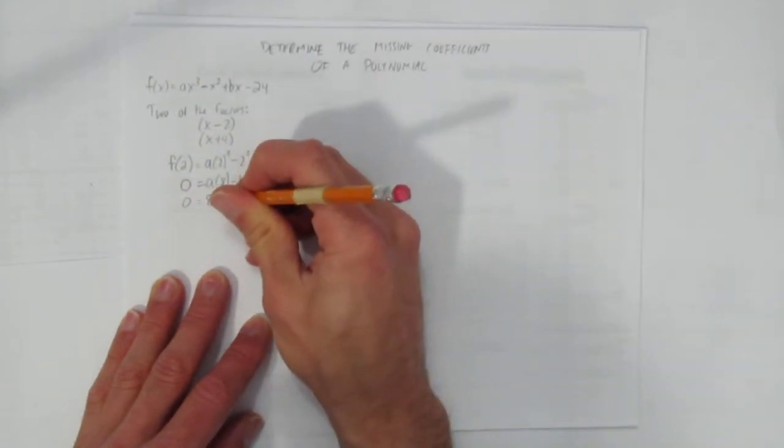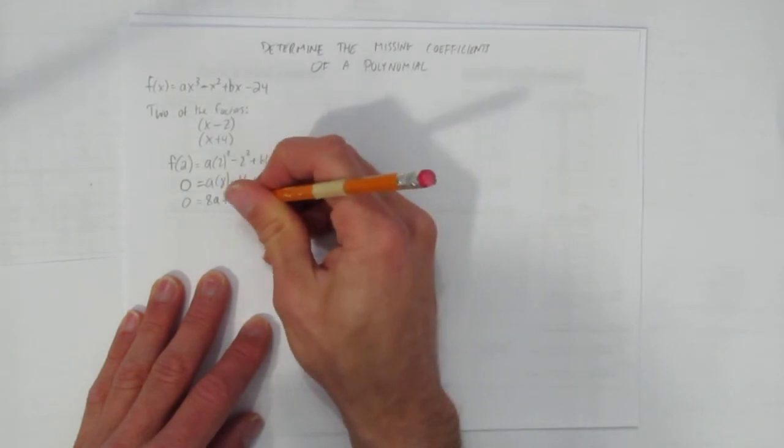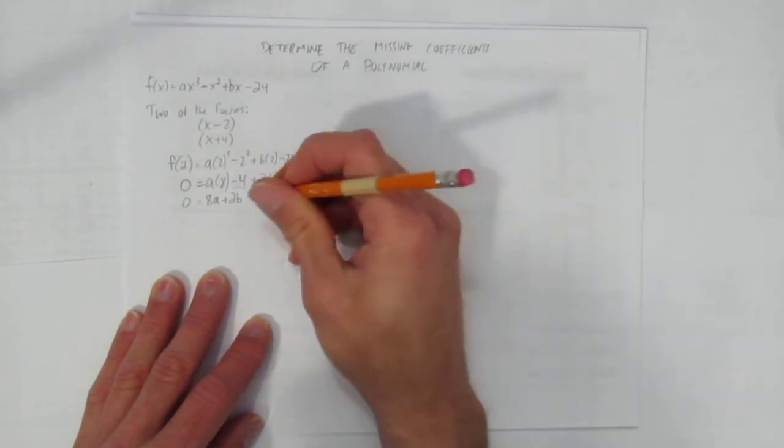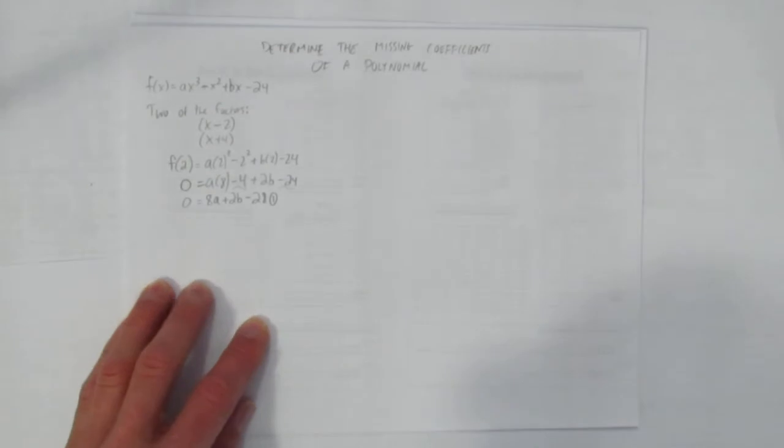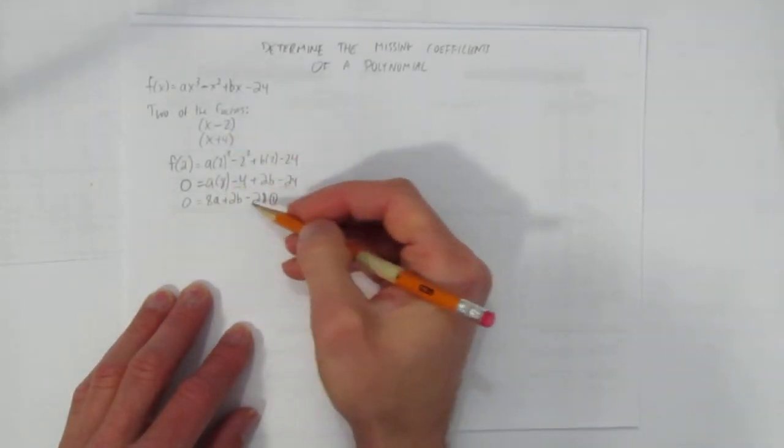0 equals 8a plus 2b. And then I'll combine these like terms of minus 4 and minus 24 to get minus 28. I'm going to call that equation 1. We used the zero of the factor to get an equation.